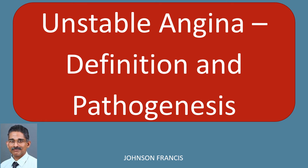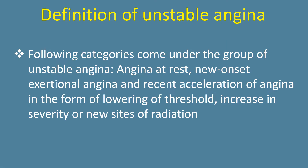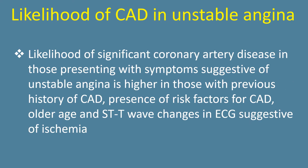Unstable angina definition and pathogenesis. The following categories come under the group of unstable angina: angina at rest, new onset exertional angina, and recent acceleration of angina in the form of lowering of threshold, increase in severity, or new sites of radiation. Likelihood of significant coronary artery disease in those presenting with symptoms suggestive of unstable angina is higher in those with previous history of coronary artery disease, presence of risk factors for CAD, older age, and ST-T changes in ECG suggestive of ischemia.